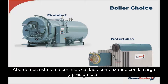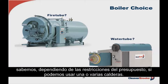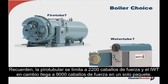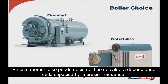Looking more specifically at total load and pressure: once we've determined the total load after the system is up to temperature and pressure, we know — depending on budget constraints — if we need one boiler or can afford multiples. Remember, the package fire tube is limited to about 2,200 horsepower, and the IWT can go to approximately 9,000 horsepower in a single package. As far as pressure, the fire tube tops out at approximately 250 pounds, whereas the water tube is about 900 pounds. So depending on capacity and pressure requirement, the type of border choice may be decided right here.